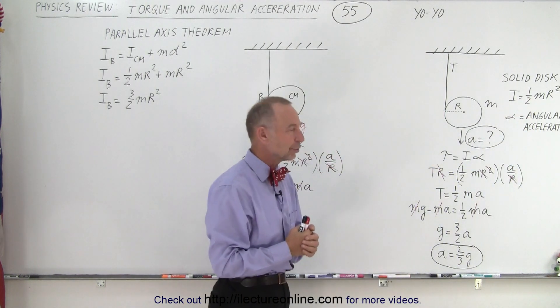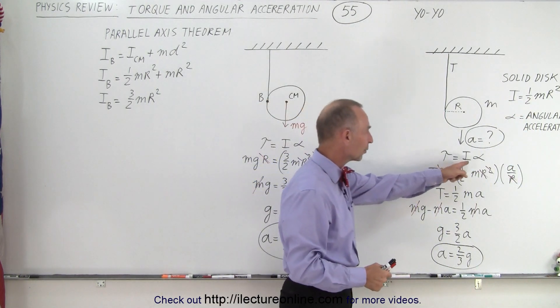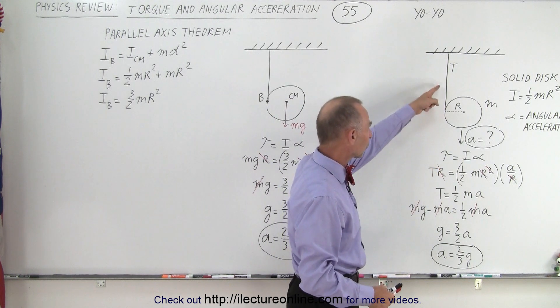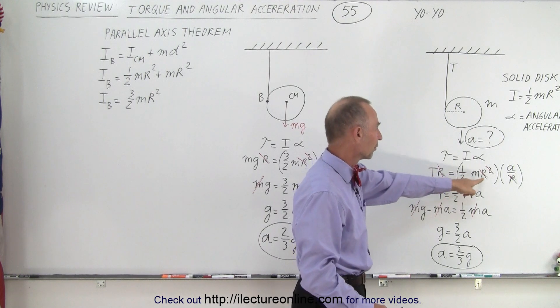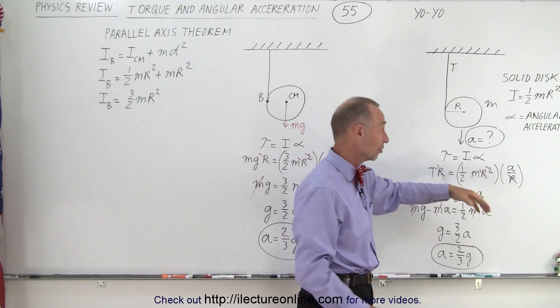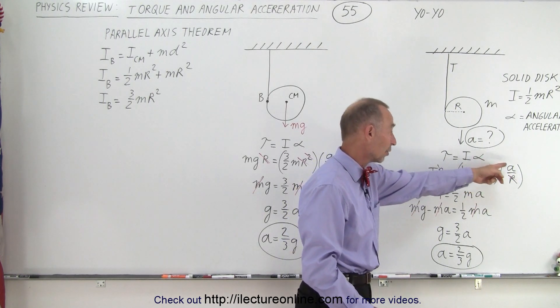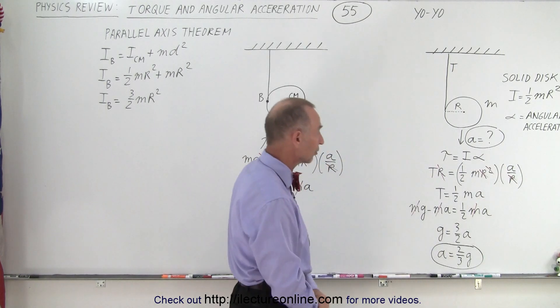So what is the acceleration of that yo-yo? We use torque equals I times alpha. The torque is going to be the tension of the string times the perpendicular distance r, which is equal to the moment of inertia times a over r, which is the equivalent for the angular acceleration converted to the linear acceleration.